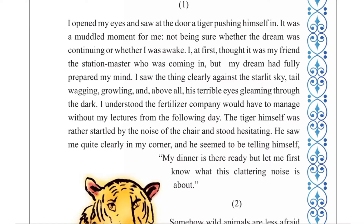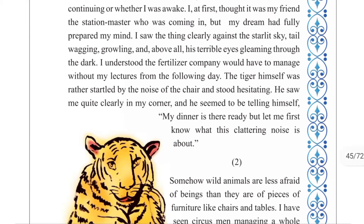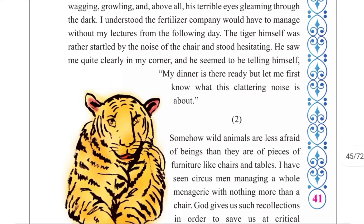At first he thought it was his friend the station master who was coming in, but his dream had fully prepared his mind. In front of him were the light-shining eyes of the tiger, his tail moving, and the growling sound — above all, his terrible eyes gleaming through the dark. The writer understood the fertilizer company would have to manage without his lecture from the following day, as the tiger would not leave him.